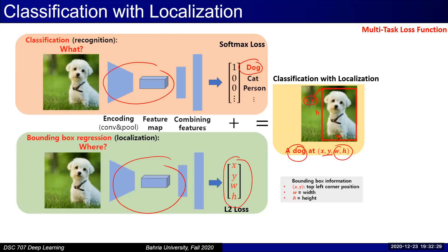What you see on the screen is called a multi-task loss function. Multi-task means there are two tasks: classification and regression. You have a classification loss, a regression loss, and you combine them to get the total loss. This is a terminology you will hear repeatedly — when you say multi-task loss function, it simply means you have more than one loss function that you are combining to get the total loss.